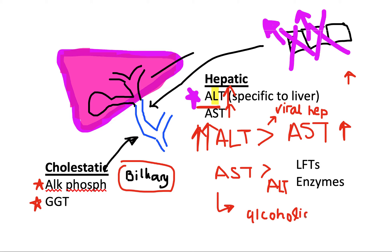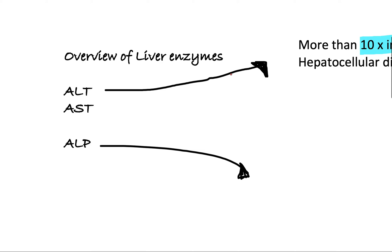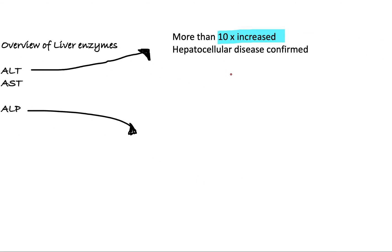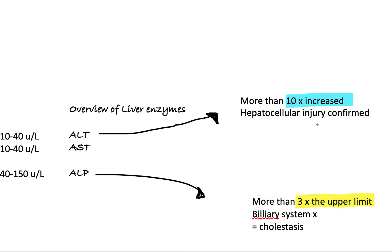When it comes to cholestatic or biliary reasons, the relevant enzymes are alkaline phosphatase and GGT. If you have a more than 10-times increase in ALT — the enzyme specific to the liver — that confirms hepatocellular injury.